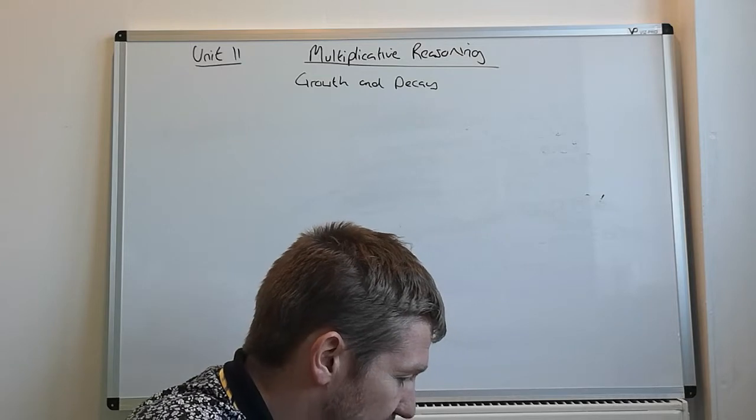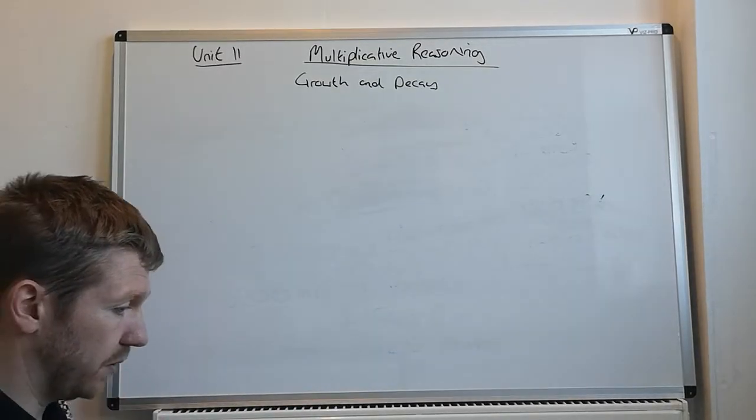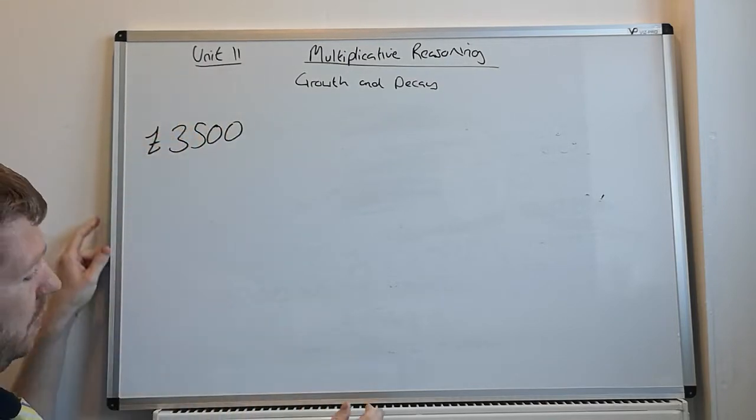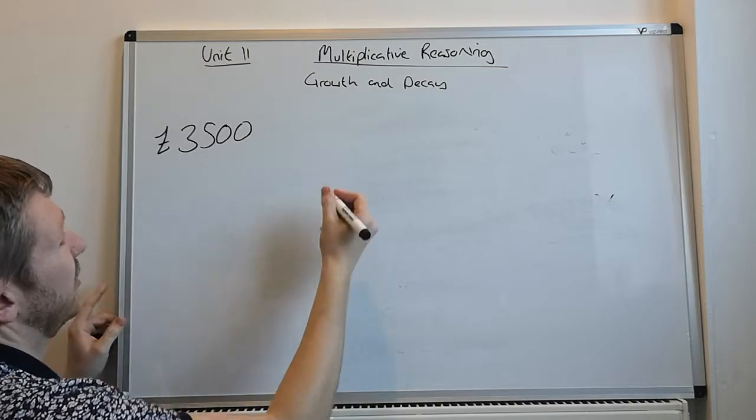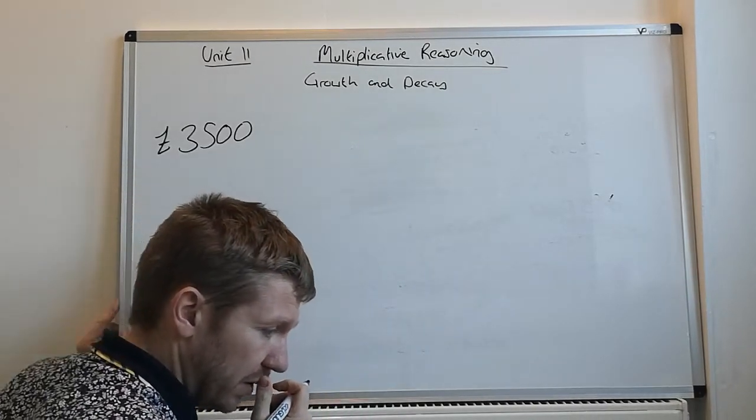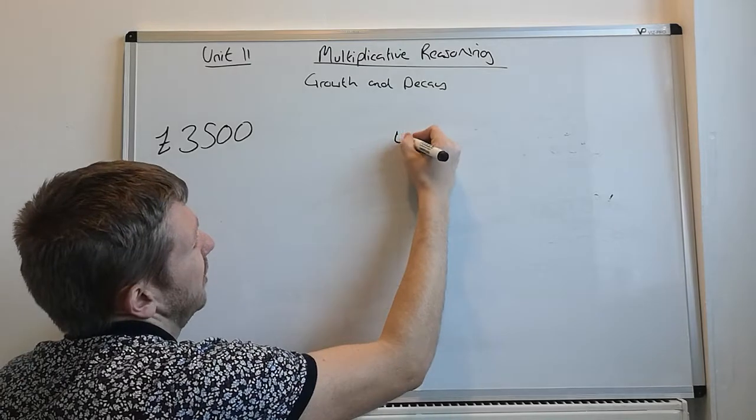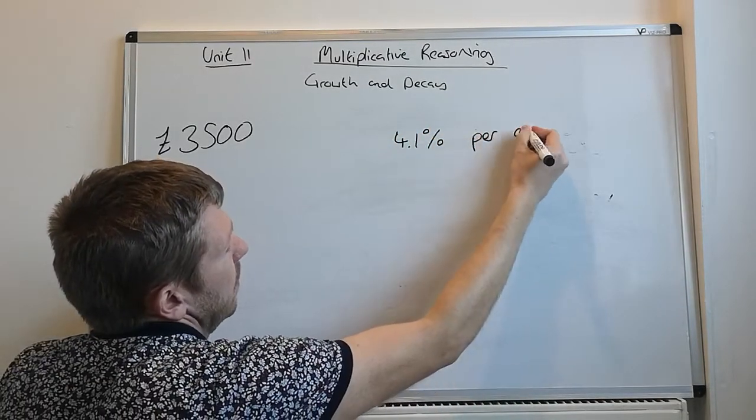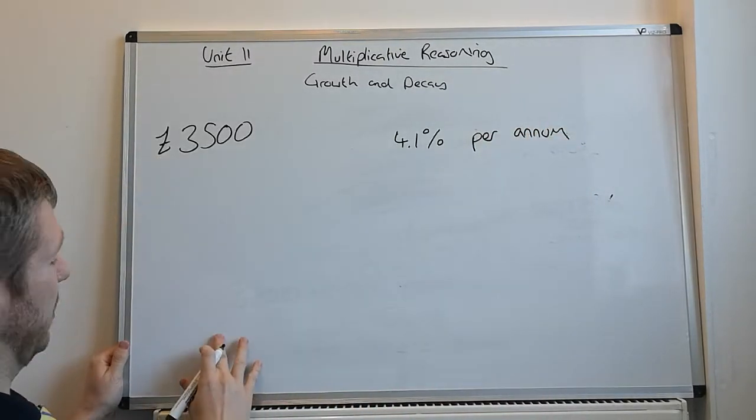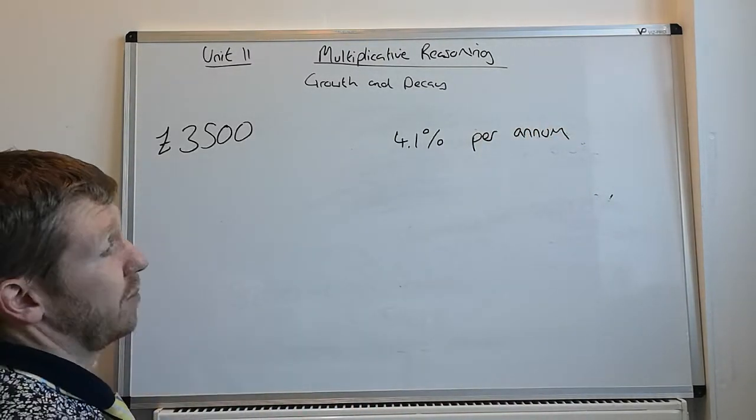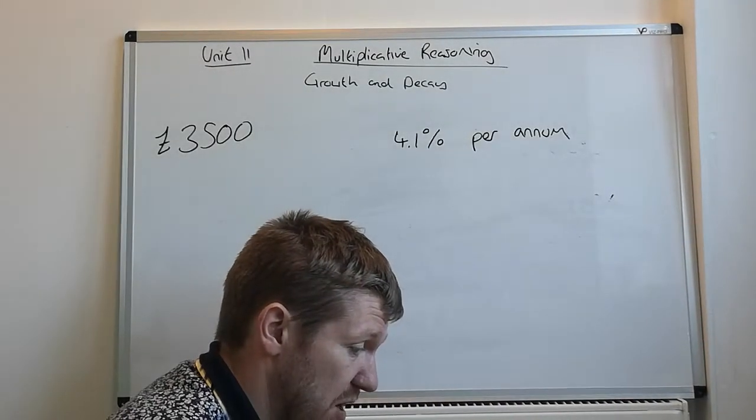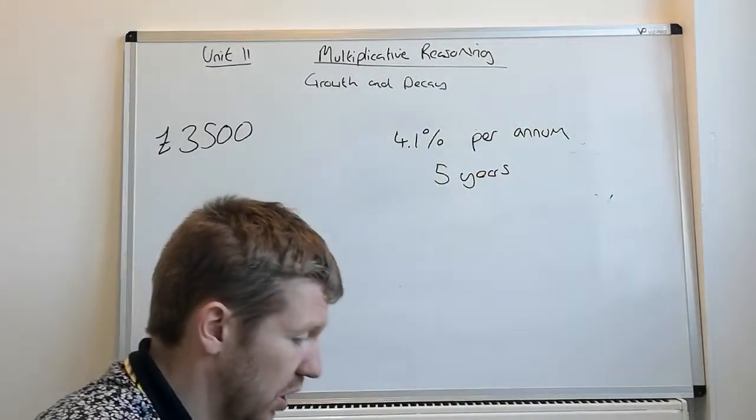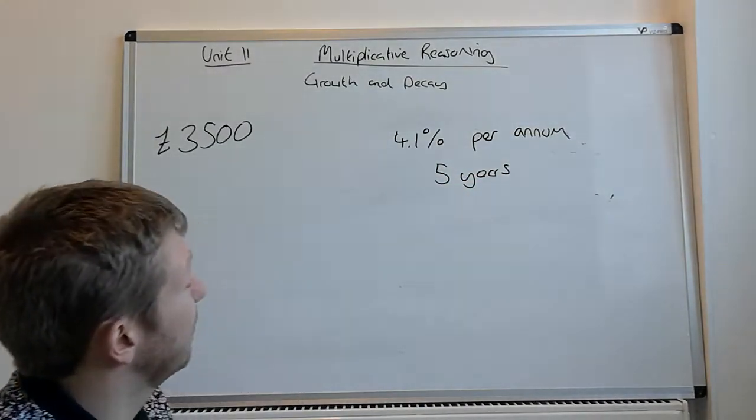Okay. Question 10. Now, 3,500 pounds is invested. 3,500 pounds. Lucky you. And it's invested into a bank account with an interest rate of 4.1% per annum. 4.1% per annum. Per annum just means per year. And it was in there for five years. Work out the total amount in the account after five years.